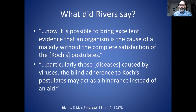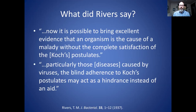I looked at Rivers' original 1937 article where he laid out these six criteria. He wrote: 'It is possible to bring excellent evidence that an organism is the cause of a malady without complete satisfaction of Koch's postulates.' He also said: 'the blind adherence to Koch's postulates may act as a hindrance instead of an aid' — suggesting he was looking for a shortcut. He acknowledged: 'It's obvious that Koch's postulates have not been satisfied in viral diseases.' I'll still accept Rivers' criteria as valid.